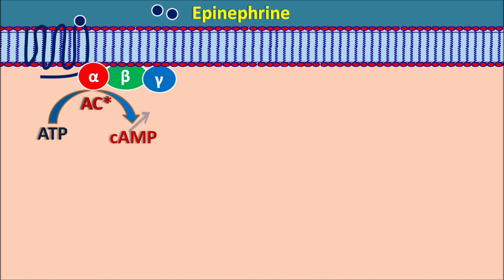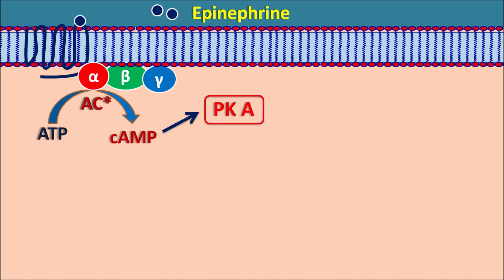This cyclic AMP then activates protein kinase A, which plays an important role in controlling many cellular functions. Here, protein kinase A can control lipolysis by activation of a few enzymes. These enzymes are responsive towards hormones, so they are called hormone sensitive lipase.